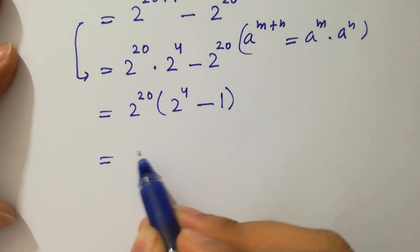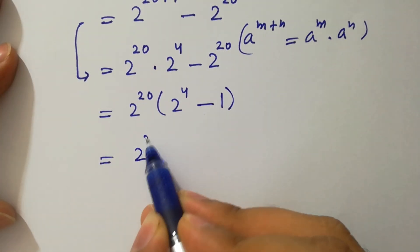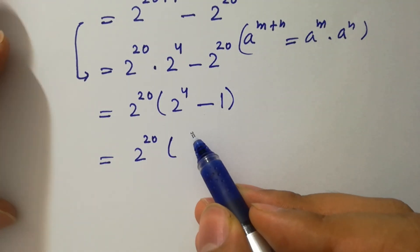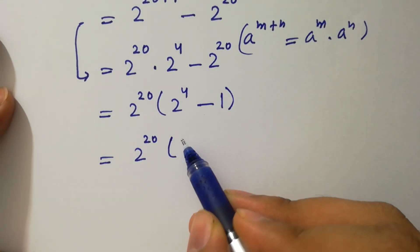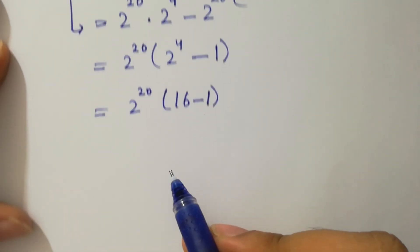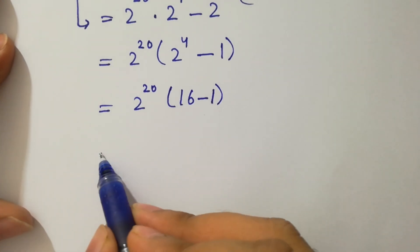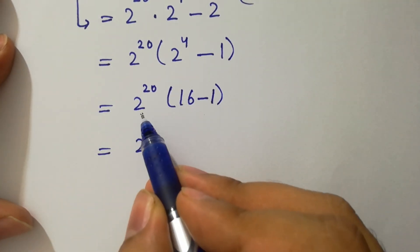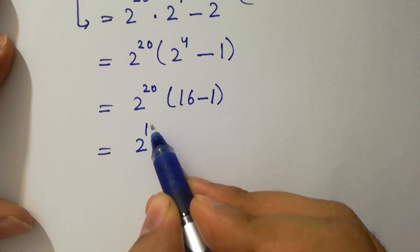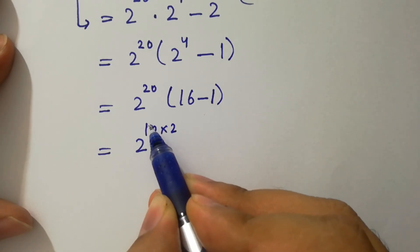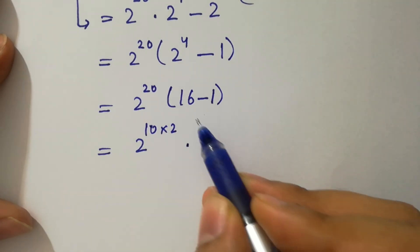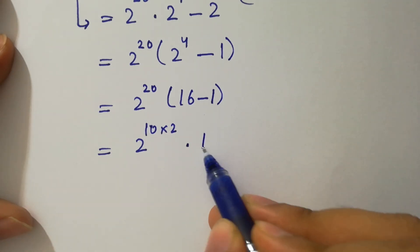So we have 2^20 times (2^4 minus 1). Since 2^4 is 16, we get 2^20 times (16 minus 1), which is 2^20 times 15. And 2^20 is the same as (2^10)^2.